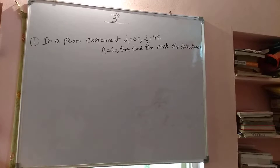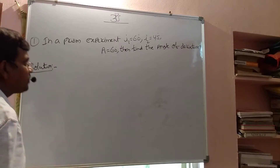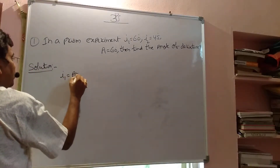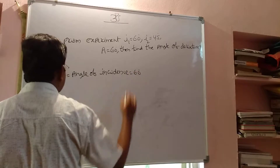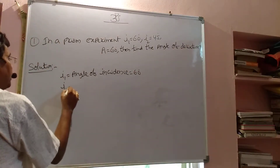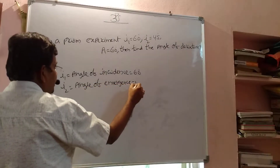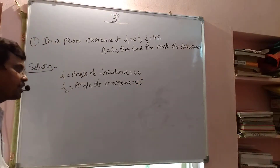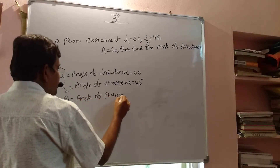In a prism experiment, I1 equals 60 degrees and I2 equals 45 degrees, and the angle of prism A equals 60 degrees. Then find the angle of deviation. I1 is called the angle of incidence, equal to 60 degrees. I2 is called the angle of emergence, equal to 45 degrees. A is the angle of prism, equal to 60 degrees.